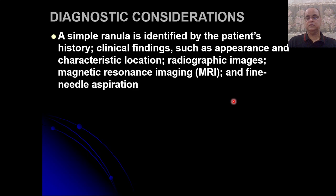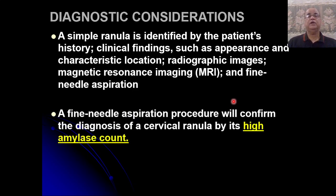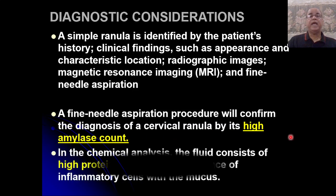Diagnosis is clear cut: typical history is a slowly progressing swelling present on the lateral side of the floor of the oral cavity, dome-shaped or spherical with a bluish tinge just like a frog belly. Still, we can go for MRI, and on radiographic images we can assess especially the plunging type and cavernous type — how much is the extent. If still in doubt, we can go for fine needle aspiration, especially if there is a mass in the cervical region. High amylase count and high protein in the fluid on chemical analysis will indicate inflammatory cells within the mucus.